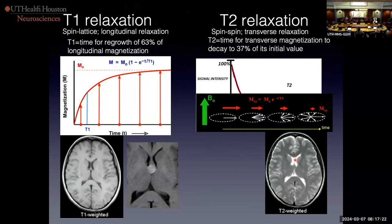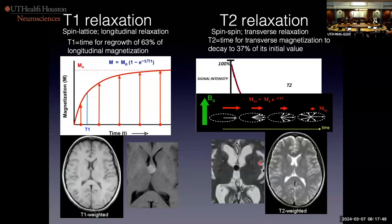What makes CSF so bright on T2? Its T2 is so long because the molecules are quite distant apart in water compared to solids where they're held rigidly together. There's not a lot of chance for interaction between protons in water, as opposed to a rigid solid state where T2 values are incredibly short. Here's a colloid cyst that is black — we suspect much less free water, with contents somewhat like crankcase oil, incredibly viscous.